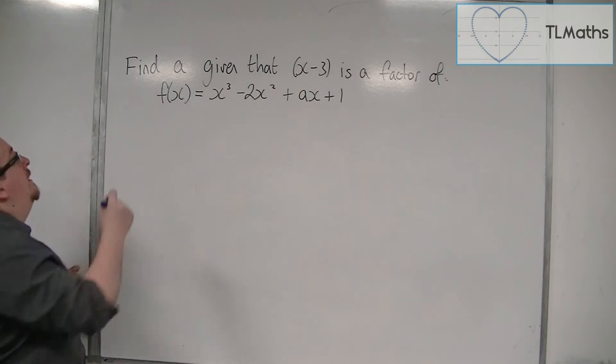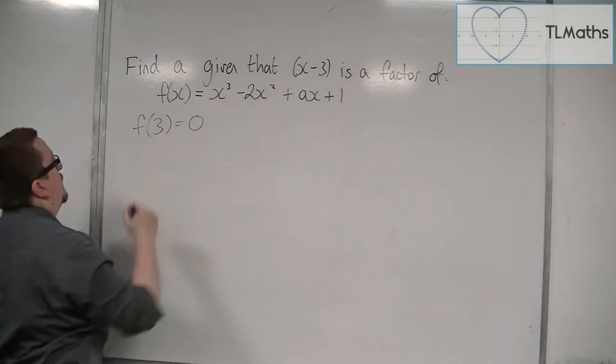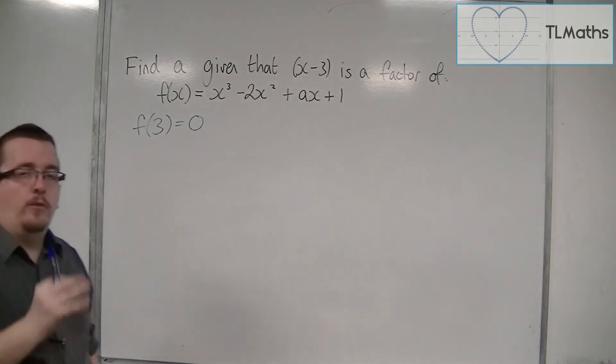And if we know that, then that means f of 3 must be equal to 0. That is what we're being told.